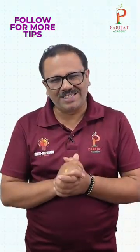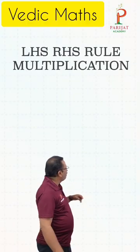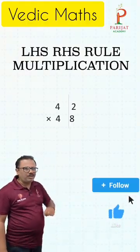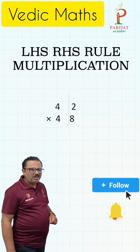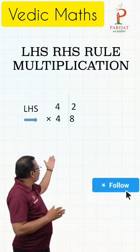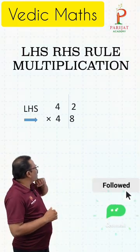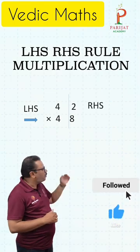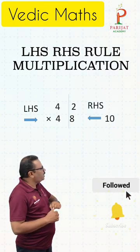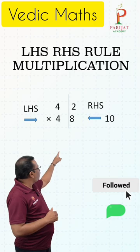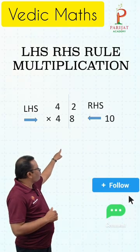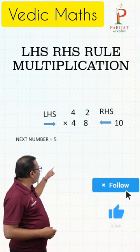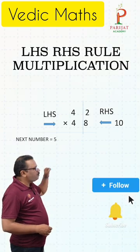Let's learn how to multiply such patterns within a second by just observing the left-hand side and right-hand side. Let's take one example: 42 times 48. Here we have to observe that the left-hand side is the same, and the addition of the right-hand side — 2 plus 8 — becomes 10. Now observe the common digit 4, and multiply 4 by its next number 5.